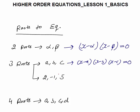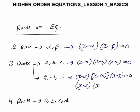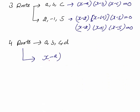Let's say the roots are 2, minus 1, and 5. So the equation will be x minus 2, times x minus minus 1, times x minus 5, all in product equals to 0. So that becomes x minus 2 times x plus 1 times x minus 5 equals to 0. That will be your cubic equation. Same way, if 4 roots are given — a, b, c, and d — the equation would be x minus a times x minus b times x minus c times x minus d equals to 0. So the same method used to form the equation from roots in quadratic applies when 3 or 4 roots are given.